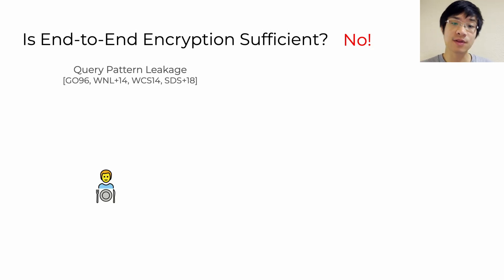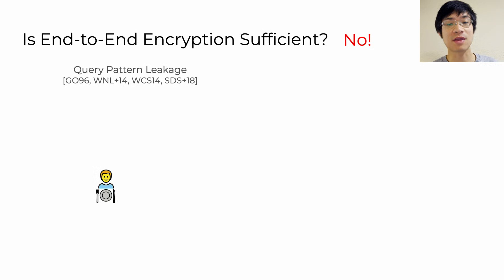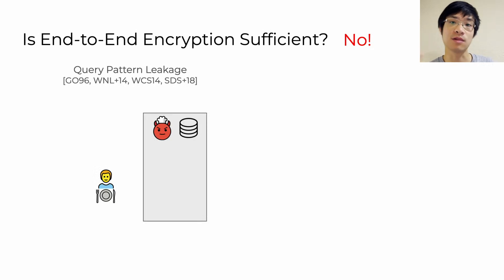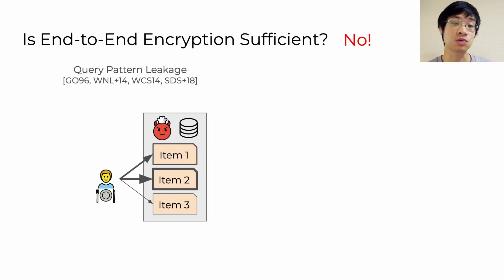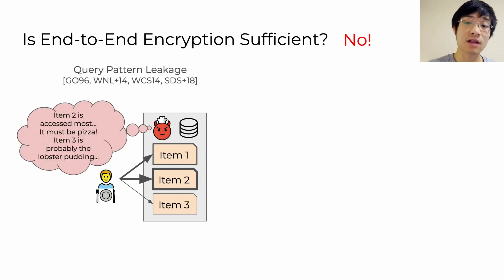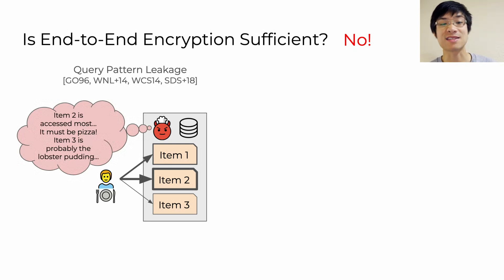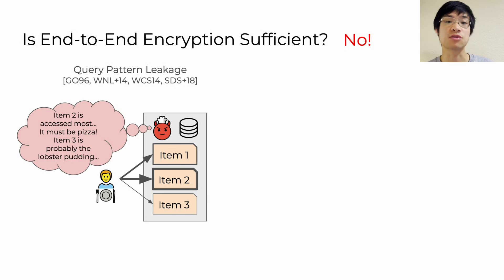For example, let's say there's a hungry customer making requests to the menu of a malicious restaurant. The more frequently accessed items probably correspond to common items like pizza, while less frequently accessed items are probably less tasty items, like a lobster pudding.